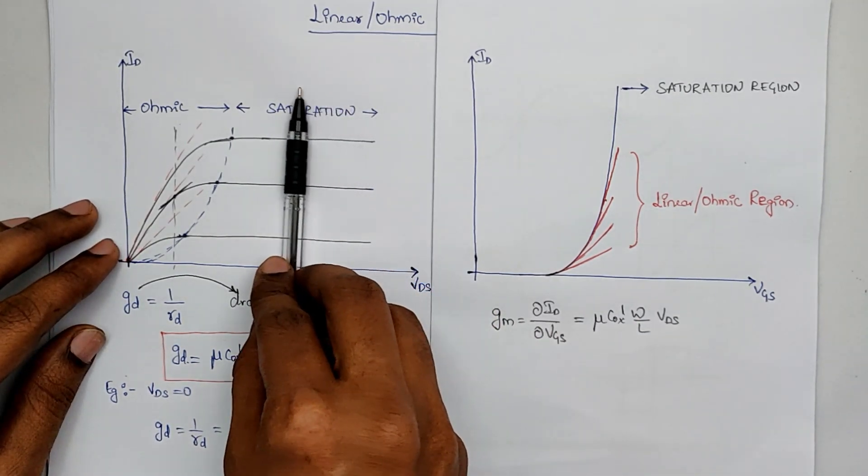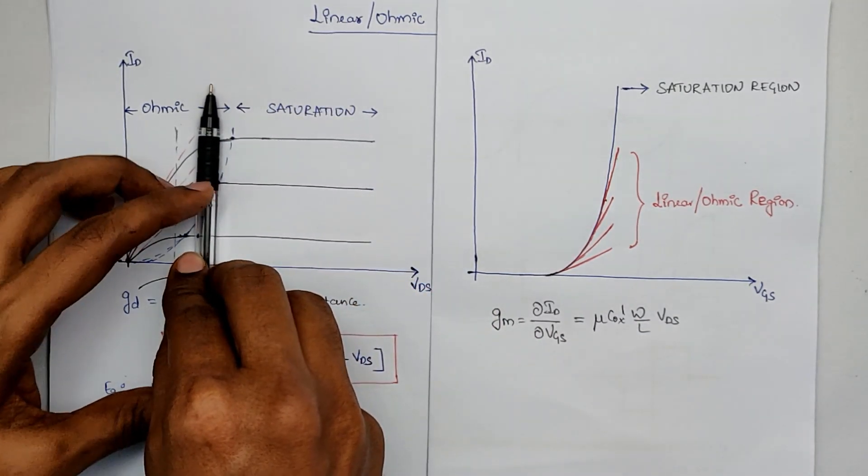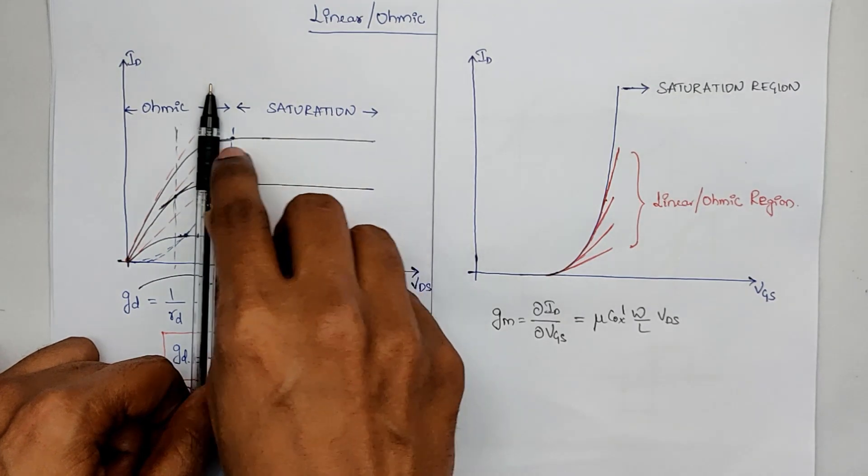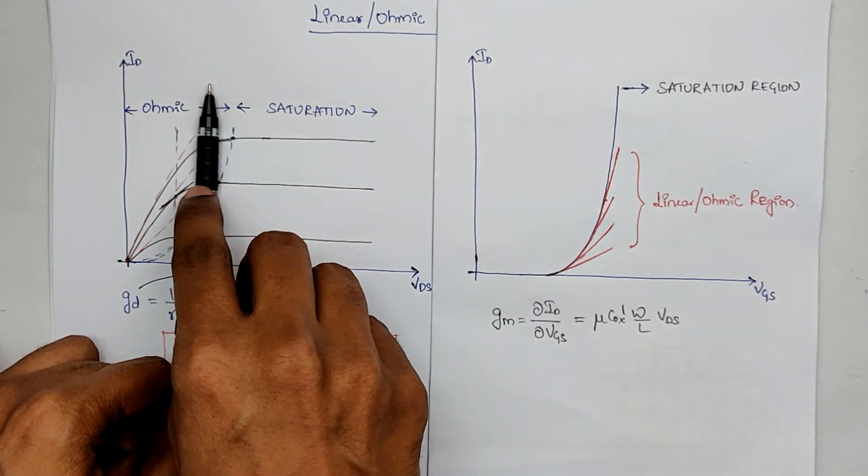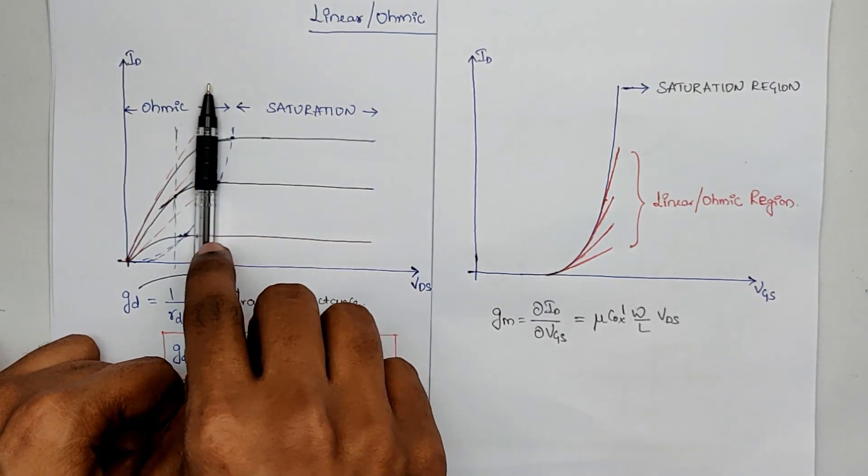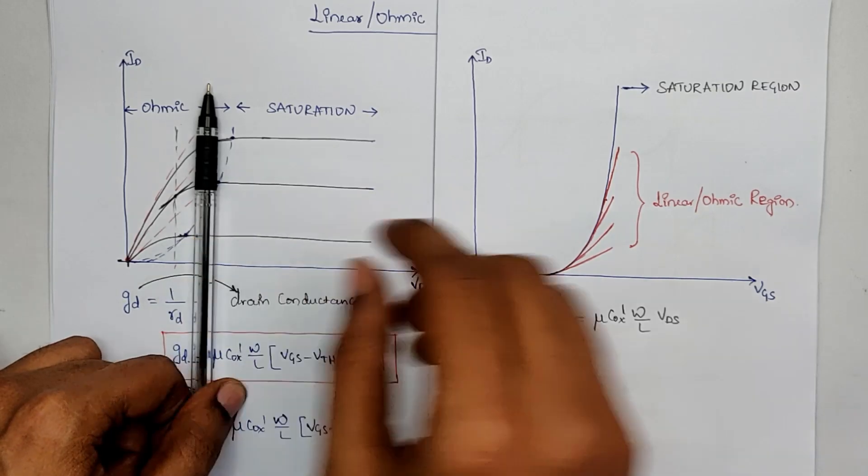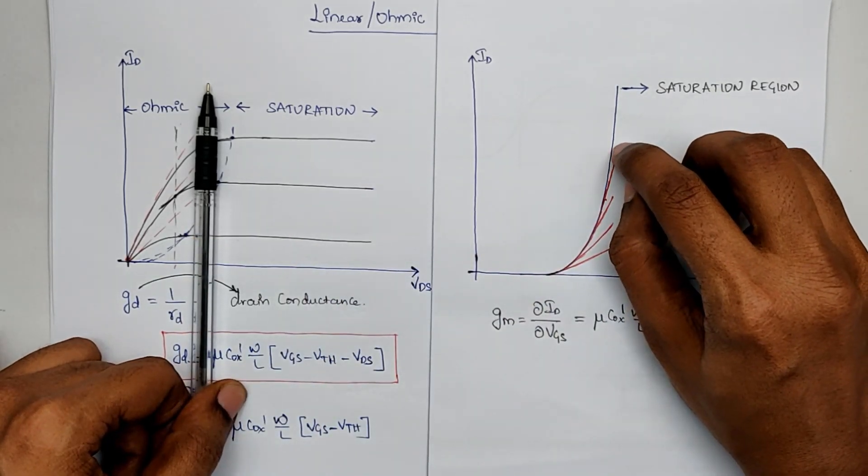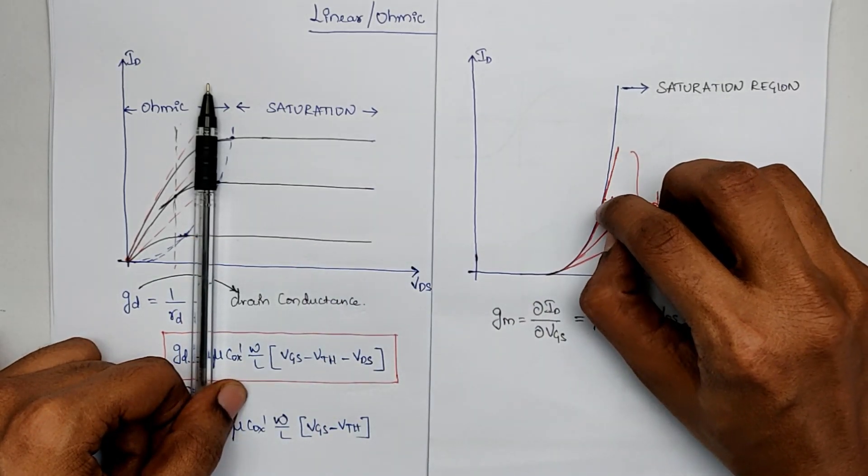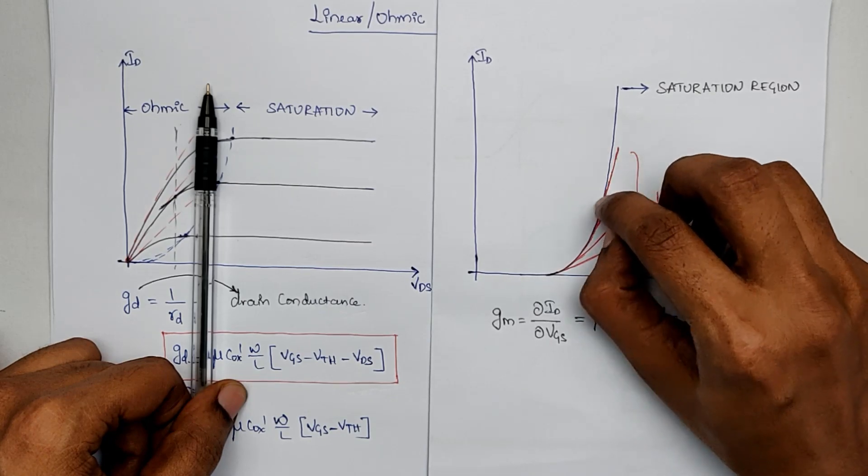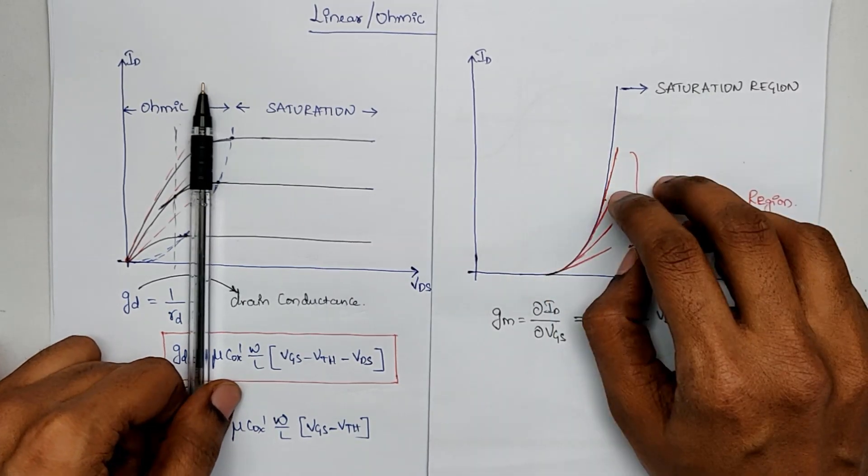But as we enter into linear region, let's say for this VGS, it is linear, for this VGS, it is linear. But of course, for this particular VGS, it is still in saturation. That's why if you take this curve, this curve actually will be linear and it actually merges with the saturation curve.